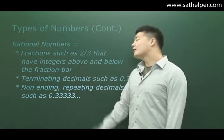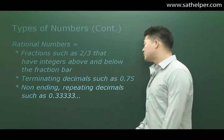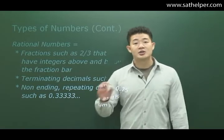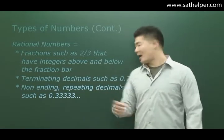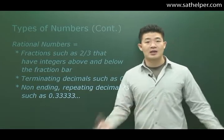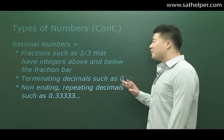So 2/3. Now it can also be terminating decimals such as 0.75. Terminating in the sense that, well after 0.75 it doesn't repeat anymore. And if you guys notice as well, like I said, ratios describe fractions.